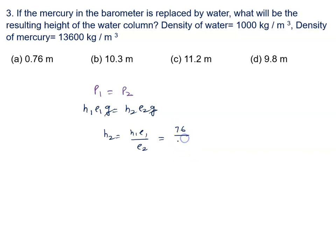So we will say 76 by 100 meter. Density is given to us: mercury 13600 kilogram per cubic meter and density of water is given to us as 1000. So finally, we solve it.